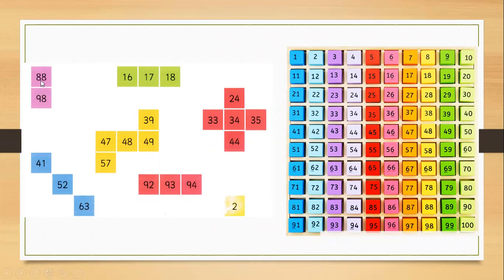Here is the number 88. Let's look at this number 88 in the 100 square chart. Where is 88? As you can see, it's in the yellow box. When you count back in ones, here is 87. When you count one forward, you have 89. So the number 88 has 87 before it and 89 after it.